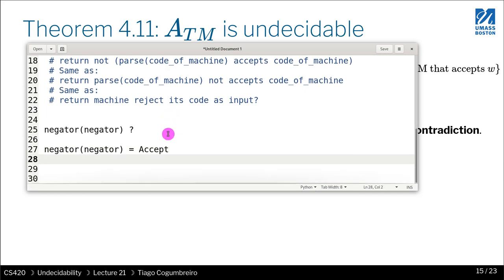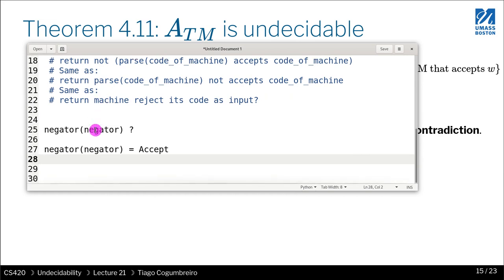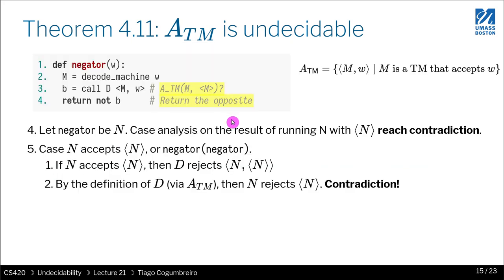So if negator is accept, that means that there's a code, here it is. That means that the machine rejects its code. So this means that the negator rejects negator. Why? It means that if negator returns true, which means b is false. If b is false, the only way for this whole thing to return true is if b is false, right? Because here we're negating that.